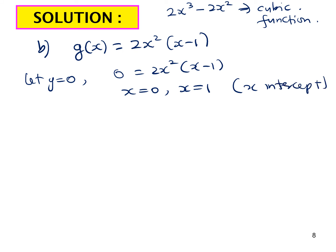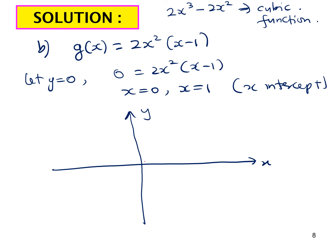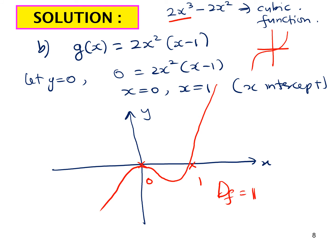To sketch the graph, the x-intercepts are at 0 and 1. Since the leading coefficient is positive, the basic cubic shape applies — the graph passes through those intercepts with the standard cubic shape. The domain and range are both negative infinity to infinity.